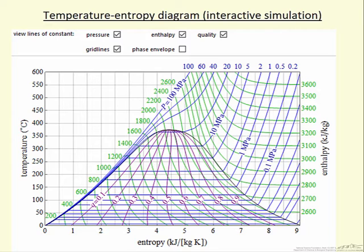When we show the diagram like this with lines of constant pressure, lines of constant enthalpy, lines of constant quality, and then a background grid, it can be confusing when you first look at it.